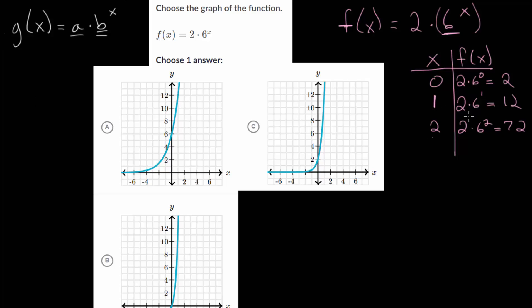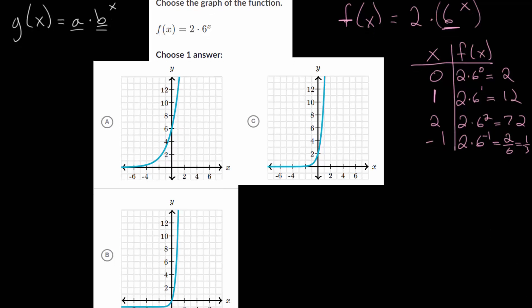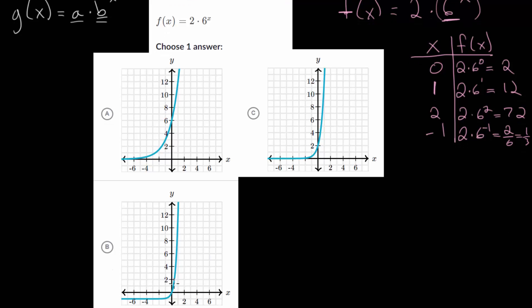You're not just limited to positive values, you could also plug in a negative value. But a lot of times these become fractions, so it's difficult to find those points on the graph. If we plug in negative 1, we'd have 2 times 6 to the minus 1, so that means we're dividing by 6 once. We have 2 times one sixth, or 2 divided by 6, which is one third. Once you have a couple points, we can start looking at the graphs and see what actually makes sense.